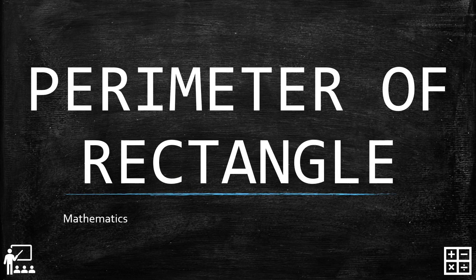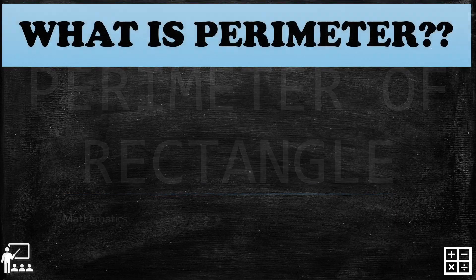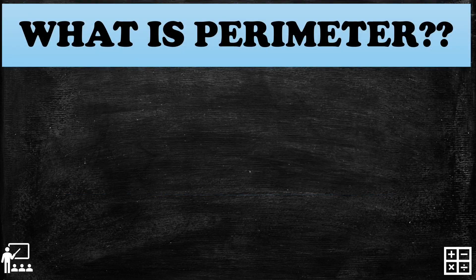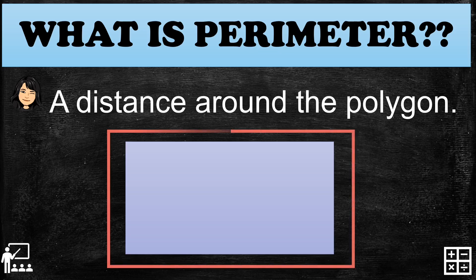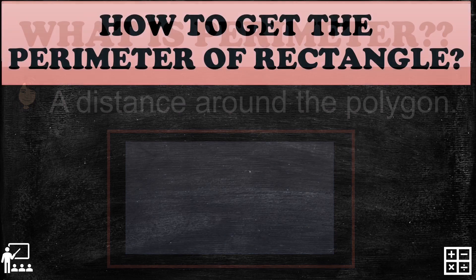This video lesson is about the perimeter of a rectangle. A perimeter is the distance around a polygon. In this lesson, I will show you the perimeter of a rectangle, or the distance around the rectangle.